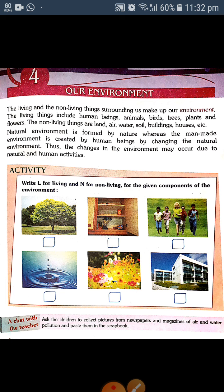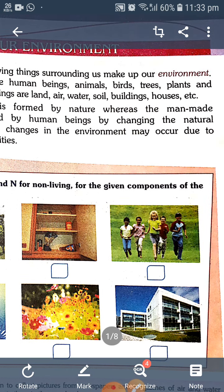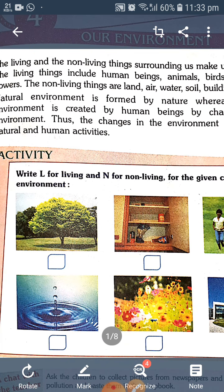You can see some activity here. Mark L for living and N for non-living for the given components of the environment. You must know which thing is living and which is non-living. The living things will be written accordingly.